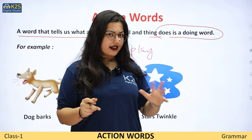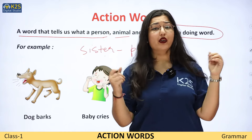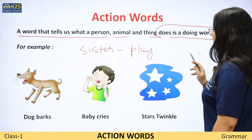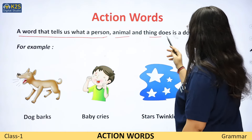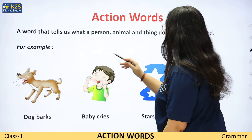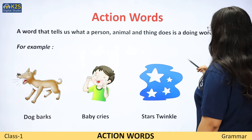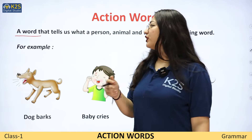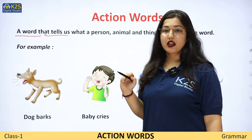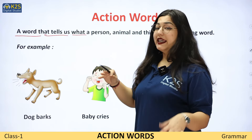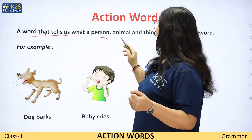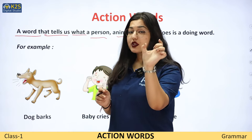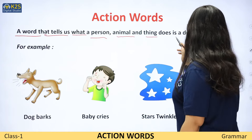Toh aap dono mein easily recognize kar sakte ho ki kya noun hota hai aur kya action word hota hai. Now, aap apni notebook mein likh sakte ho ki exactly kya hote hai action words. Aap ko mere saath saath parhna hai: 'A word that tells us about what a person, animal, thing kar raha hai — us word ko hum action word bolte hai.'